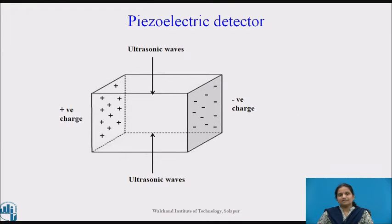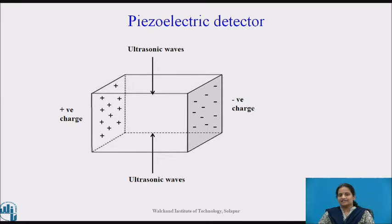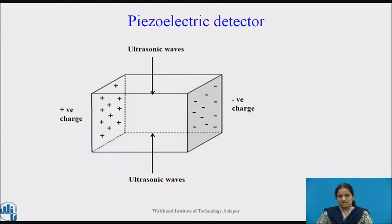The second method is the piezoelectric detector. In this method, ultrasonic waves are applied to one pair of faces of a quartz crystal. As a result, varying electric charges are produced on the other pair of faces of the crystal. These charges, being small, are amplified and then detected.